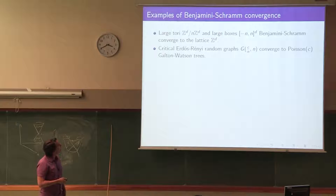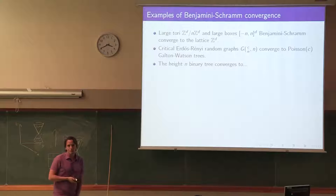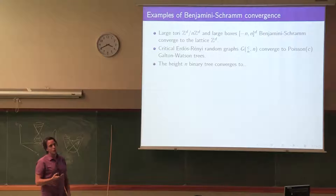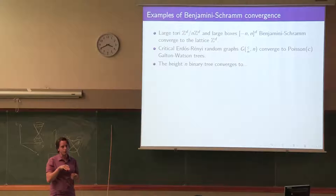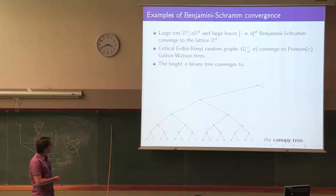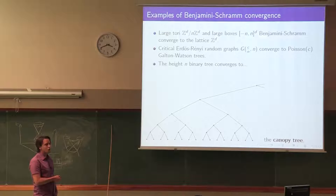When you start with large tori, you converge to the infinite lattice — a randomly chosen point will be somewhere in the middle, and the local neighborhood looks exactly like the infinite lattice. For a binary tree on n vertices, it's tempting to say it converges to the infinite binary tree, but this is false because most vertices are actually leaves. On the leaves, the local neighborhood looks like the canopy tree — an infinite line with finite branches hanging off it, which is a recurrent graph.